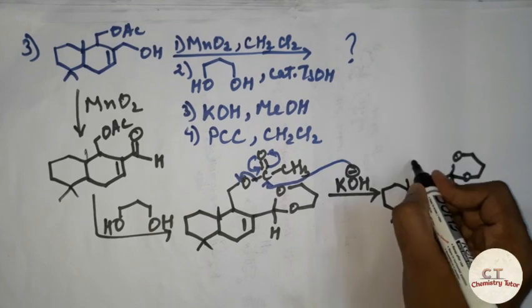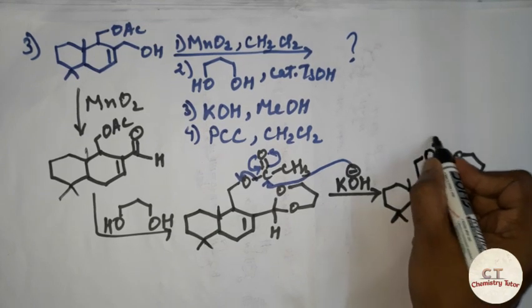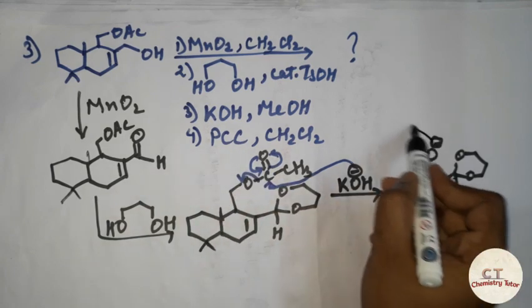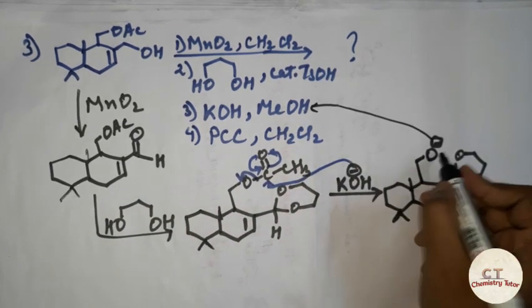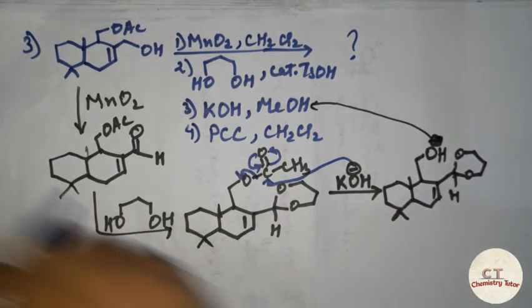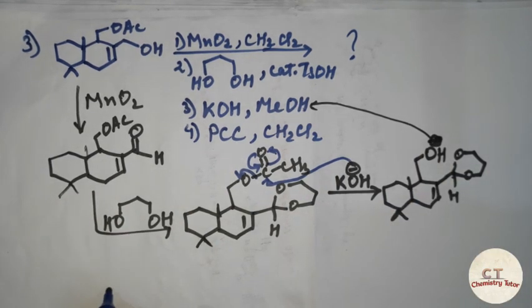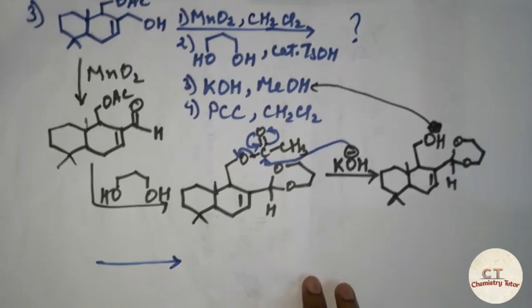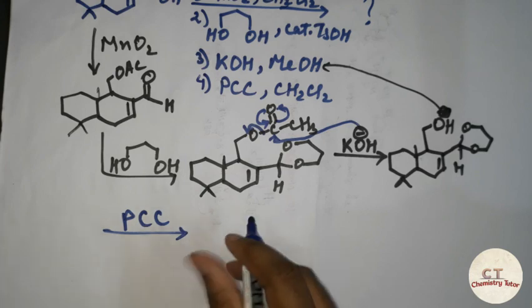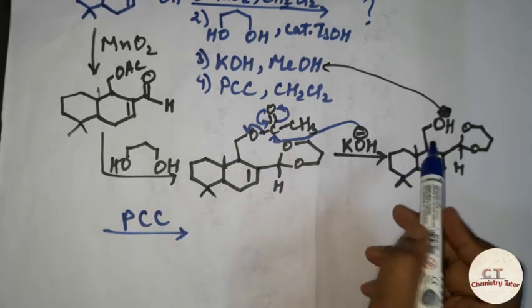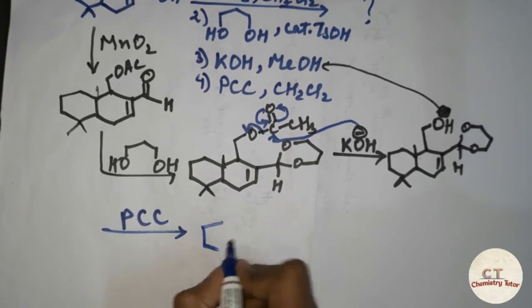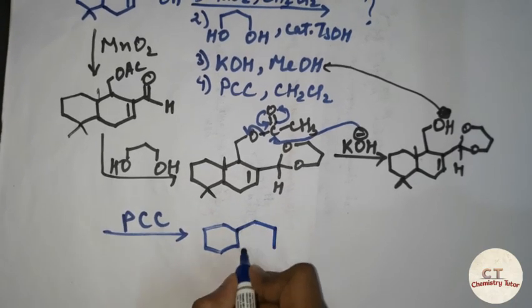The protecting group will be removed, and O⁻ will be there. This O⁻ will further abstract a proton from the solvent itself, so it will become OH. Then in the next step, PCC is given. PCC acts as an oxidizing agent — it will oxidize alcohol to aldehyde. So the final product we are getting is the aldehyde.